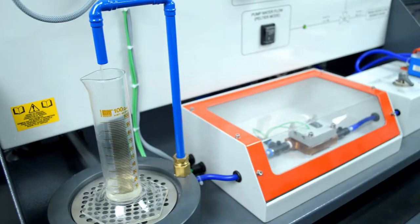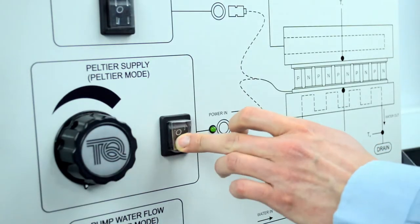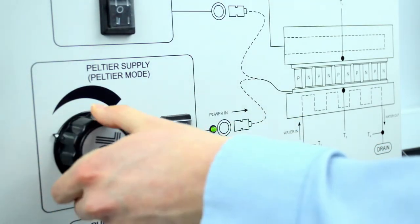A calibrated vessel allows students to measure the fixed water flow. A variable voltage supply controls the electrical power to the device.